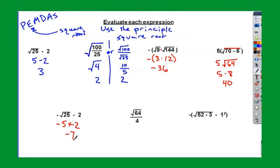The next one, notice the square root sign is only over the 64. It doesn't extend to the 4. So that means I have a square root and division. Square roots come first because they're exponents. Square root of 64 is 8, divided by 4 is 2.